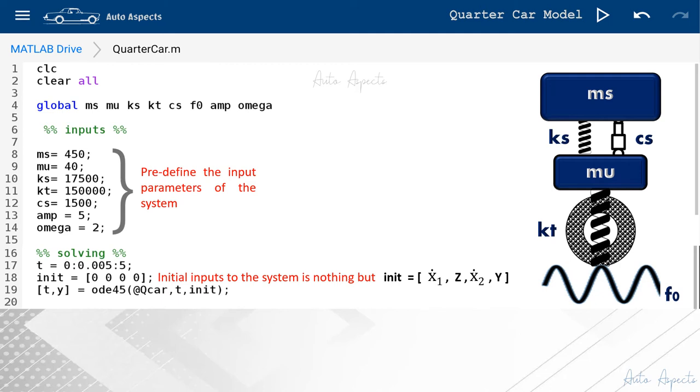The initial variables are assumed to be zero as the major excitation is offered from the road input. Then comes the ODE45 functionality, which gives us the final solution.